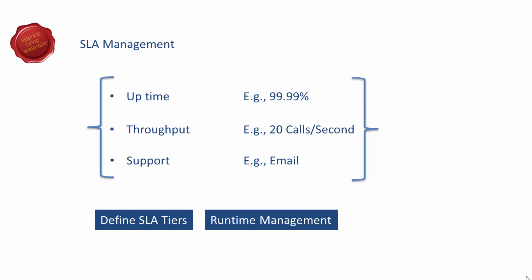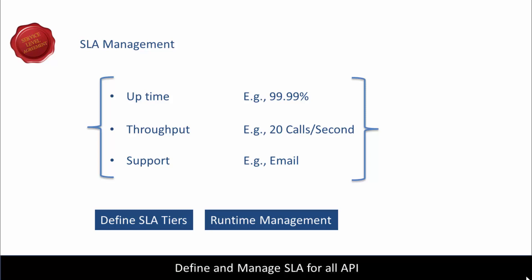Another important consideration is runtime SLA monitoring and management. In the case of a public API, the API provider needs to ensure they are holding their end of the SLA by monitoring key performance indicators of the API. This ensures you are offering the quality of service the API consumer signed up for. As a good practice, an API provider should always define, publish, and manage the SLA for their APIs.